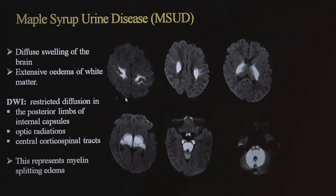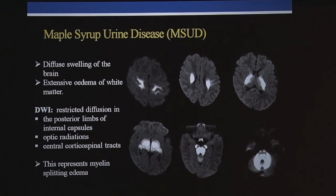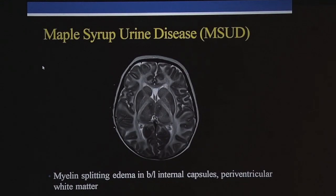Multiple siblings from the same family can present with MSUD. This edema is actually not true restriction of diffusion but myelin splitting edema, which involves the posterior limbs of the internal capsules, optic radiations, corticospinal tracts, peridentate cerebellar white matter, and middle cerebellar peduncles. Eventually, significant atrophy and degeneration of brain parenchyma occur, with periventricular hyperintensity reaching up to subcortical U fibers. Other patients show myelin splitting edema in the internal capsules and periventricular white matter, which appears chalk-like on imaging.